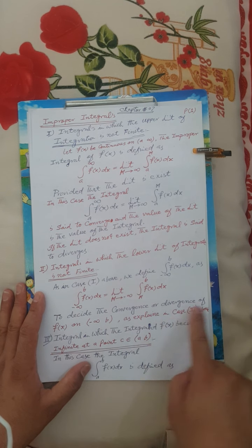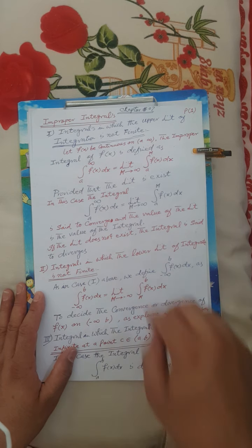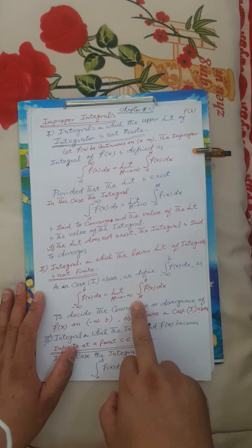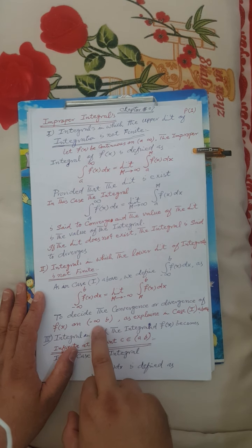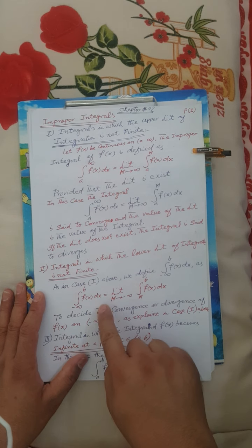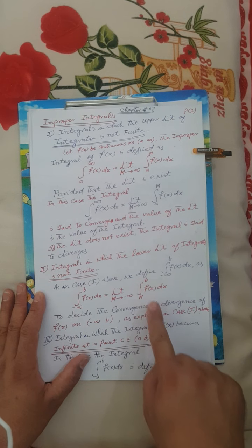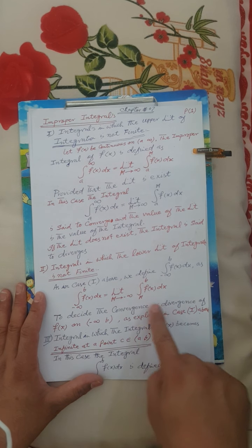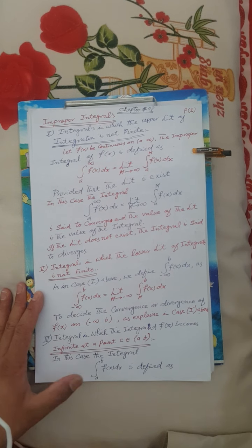To decide the convergence on this interval: if the limit of this improper integral exists, then f(x) on this interval is convergent. If the limit does not exist, then f(x) is divergent on the interval from minus infinity to b.